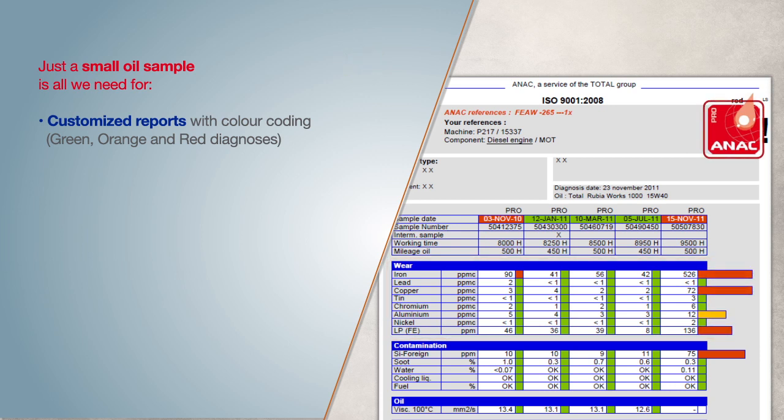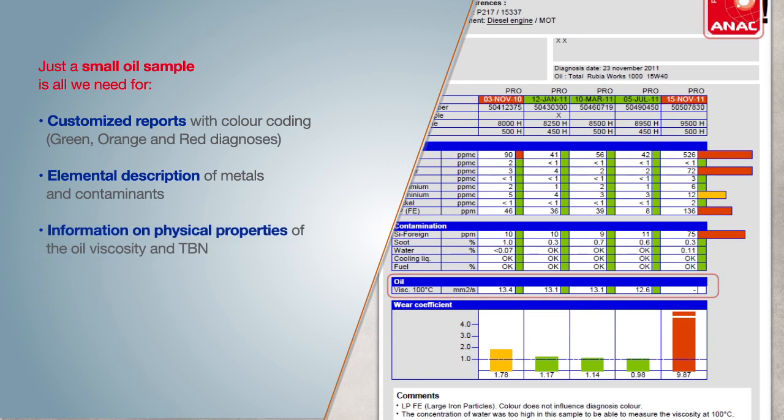Reports include color coding green, orange and red diagnosis, elemental description of metals and contaminants, information on physical properties of the oil, viscosity and TBN, with global benchmarking of identical machinery.